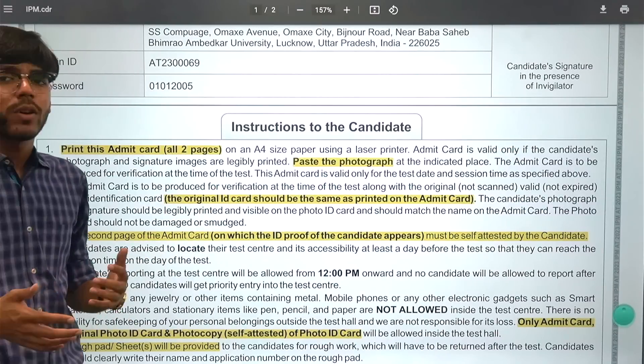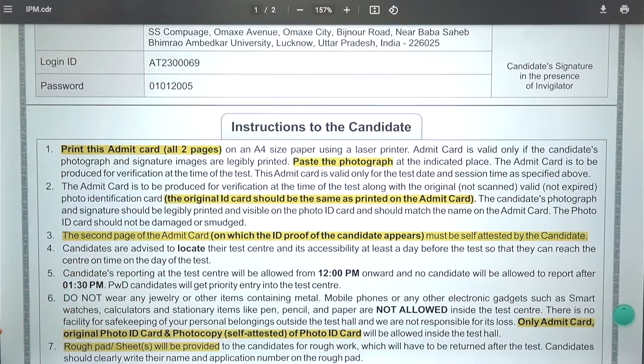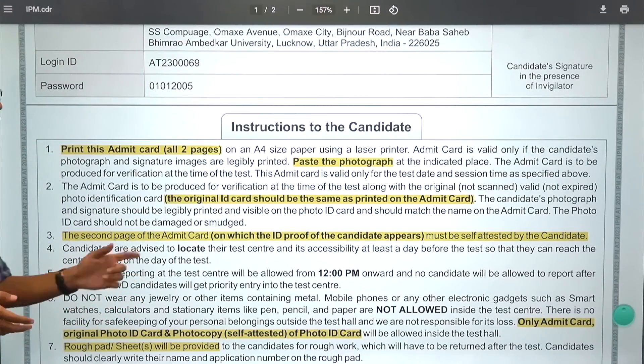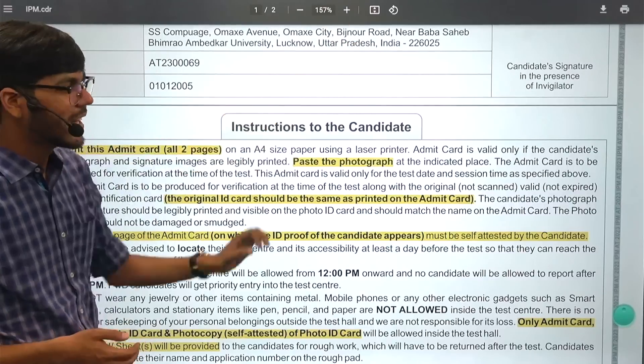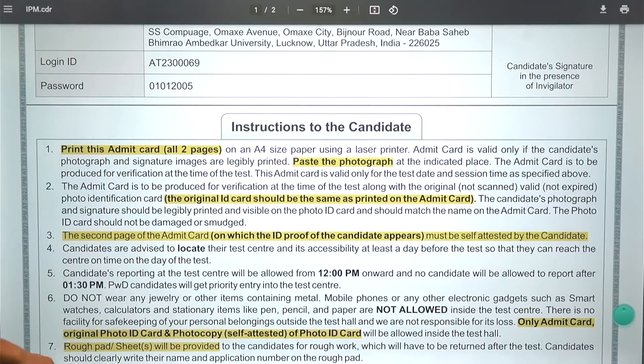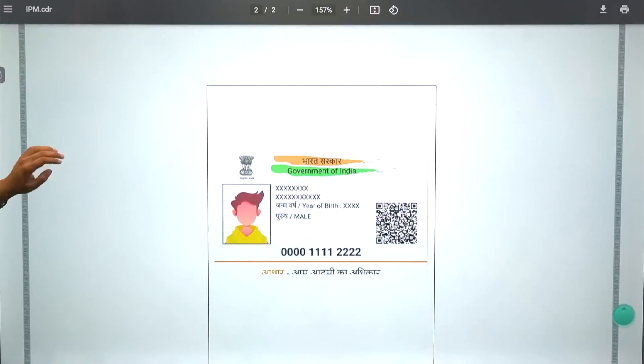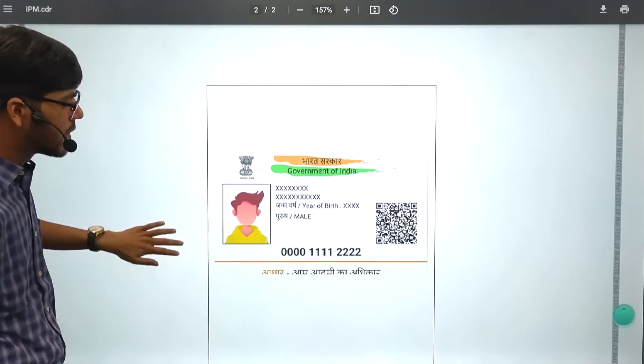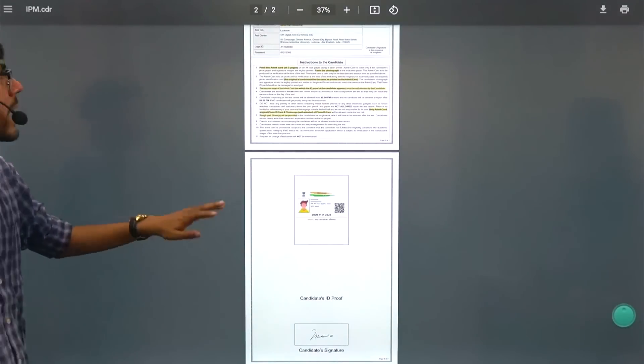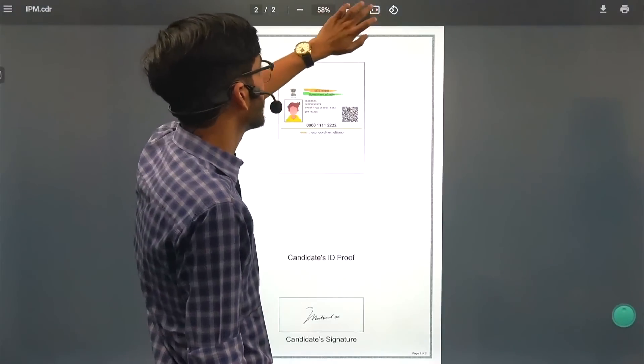If you can get a color printout, it's a good thing. If you can't get a color printout, then black and white is fine. I haven't mentioned anywhere that it needs to be a color printout. You need to paste the photograph where I mentioned, but you don't have to sign yet. Along with this, on the second page of the admit card, whatever ID proof you uploaded will be visible here. And your candidate signature will be visible here as well.